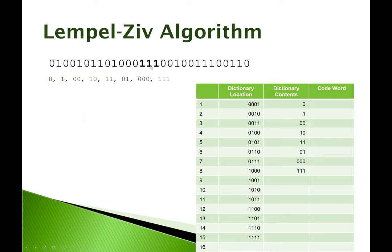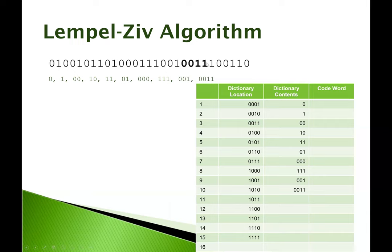So now we look at the next one, and we have a 1 and a 1, so 11 is not unique, but 111 is. And here we do the next one: 00 has already been done, but 001 has not, so that's unique. Then we go to this next one — we jumped a lot here — because 001 is not unique, that's the one we just encoded. So we actually have to keep going, and 0011 is unique, so we record that.